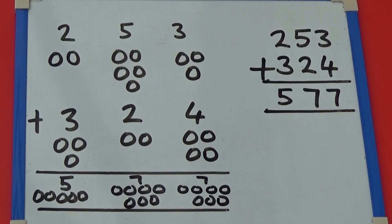We can show this by drawing out the place value counters and then the numbers written without the place value counters.